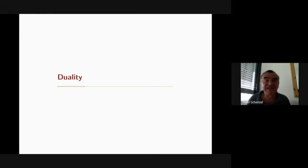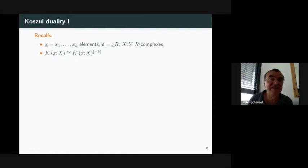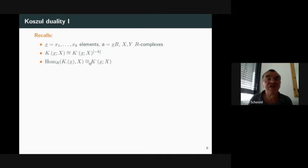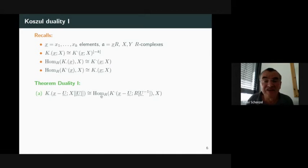Let me say something about duality. I have a sequence, the ideal, and X and Y are R-complexes. Let me recall some dualities of the ordinary Koszul complex. The Koszul complex is isomorphic to the Koszul co-complex with a certain shift. I also have the observation that the Koszul co-complex comes from the homomorphism of the Koszul complex with respect to X and the complex X.